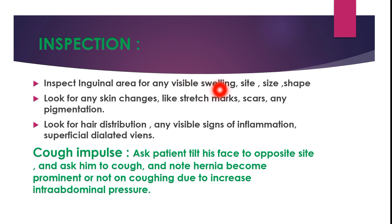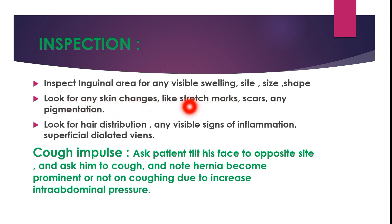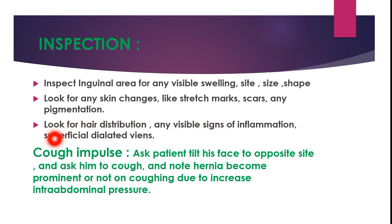The first step in hernia examination is inspection. Inspect the inguinal area for any visible swelling and note the site, size, and shape of the swelling. Also look for any visible skin changes such as stretch marks, scar marks, and any pigmentation. Look for hair distribution over the swelling and note any visible signs of inflammation like redness.